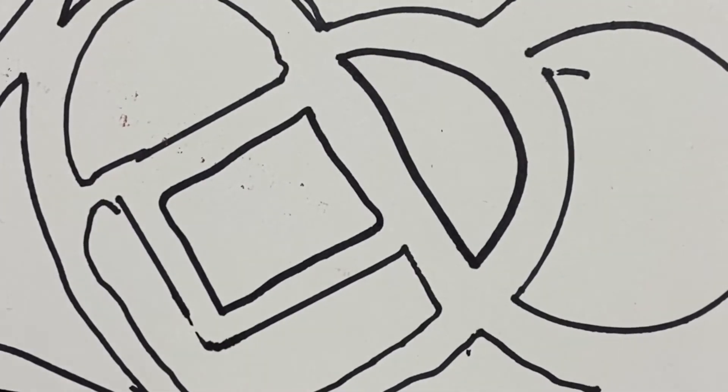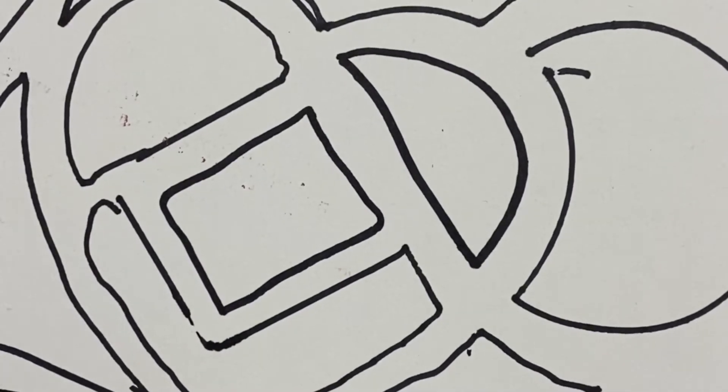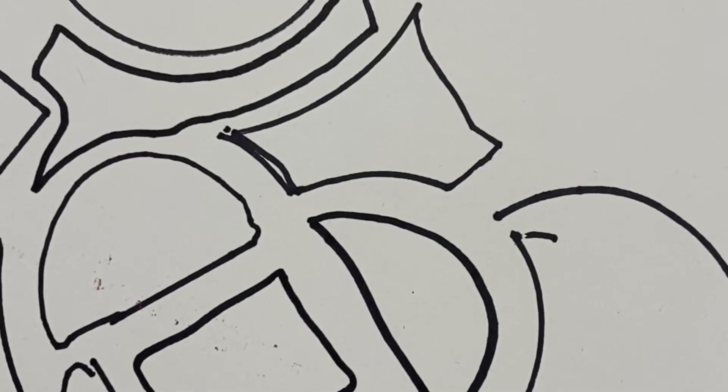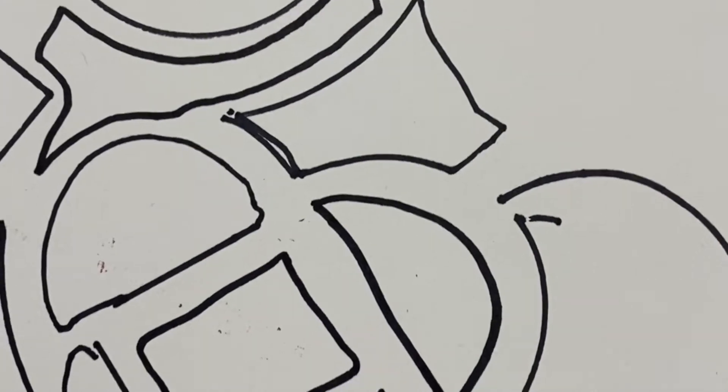And then when you're done with that, we can color it however you want to. You can color it with crayons, markers, pencils, paint, whatever you've got around your house. And come up with a pretty cool little abstract quick work of art. So I'm going to go ahead and color this for you in fast motion.